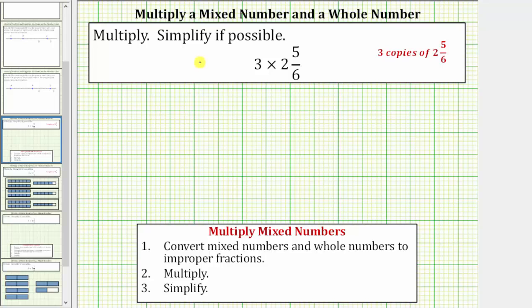We are asked to multiply and simplify if possible. Here we have a whole number times a mixed number. We can view 3 times 2 and 5/6 as meaning three copies or three groups of 2 and 5/6.